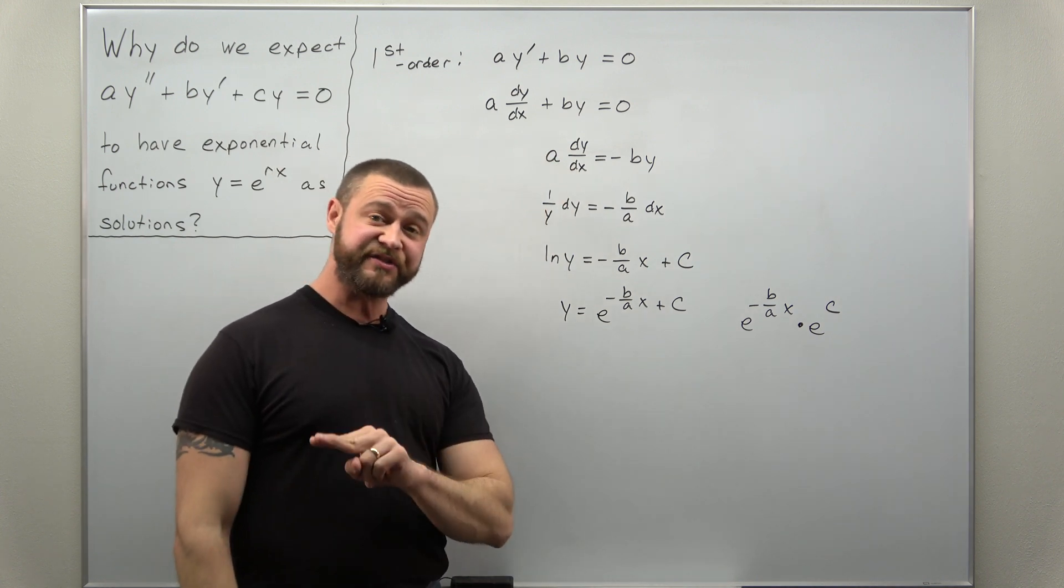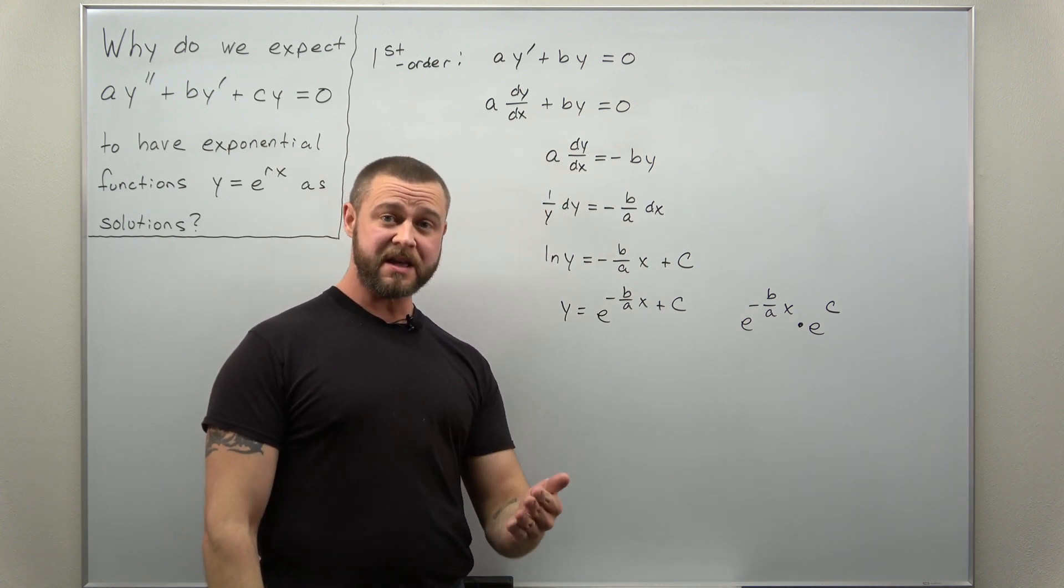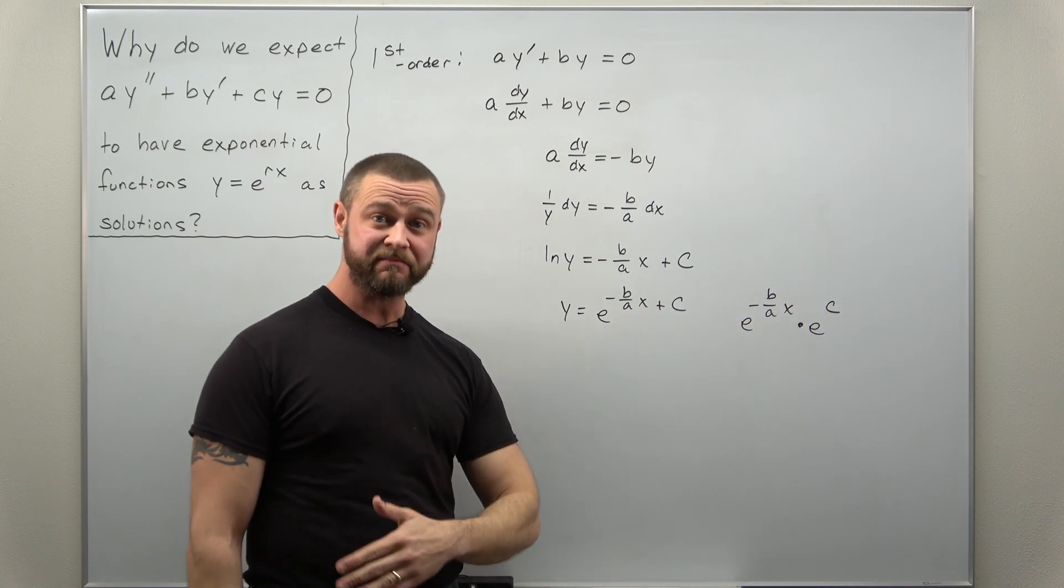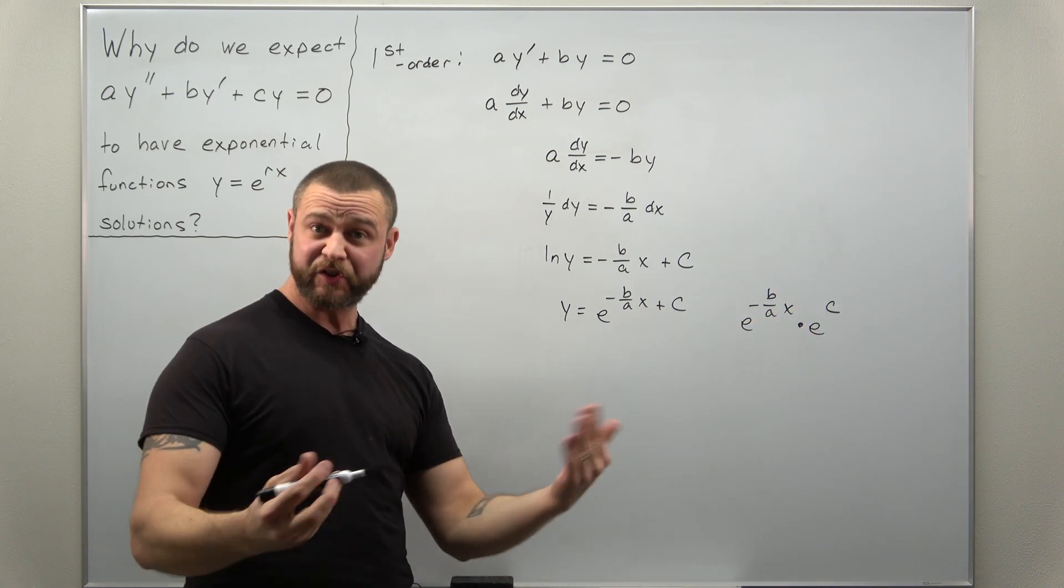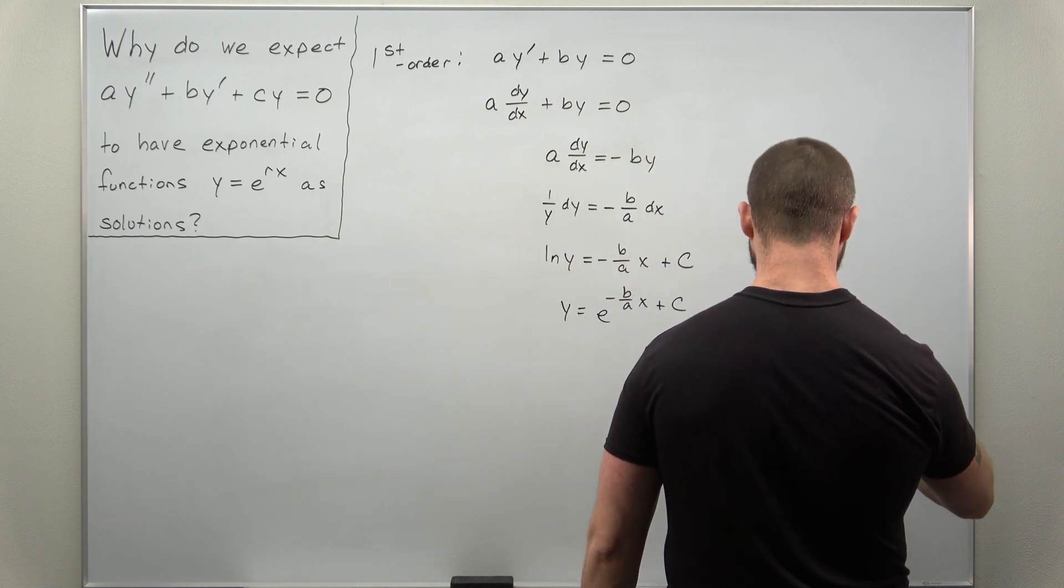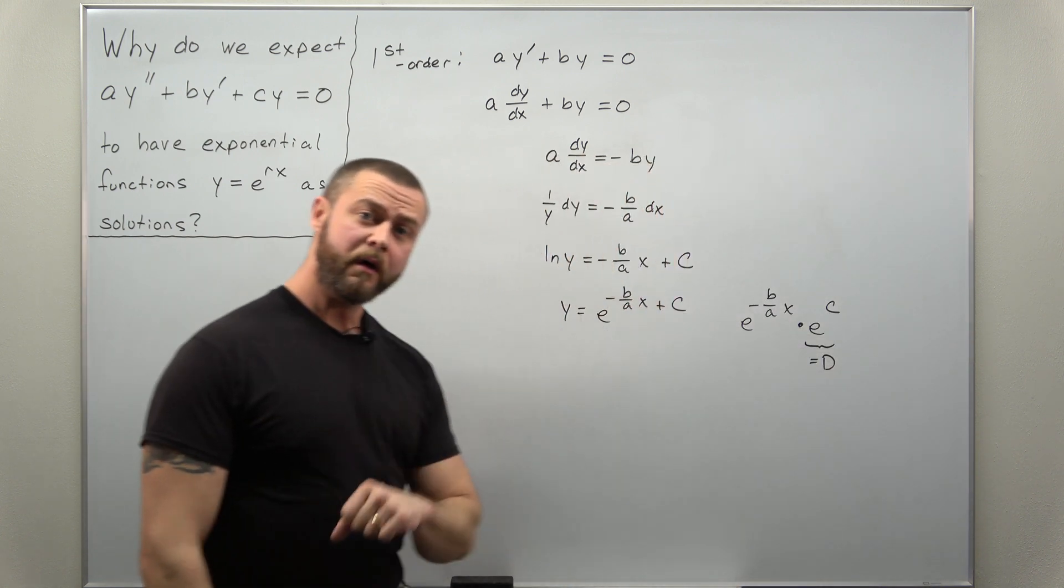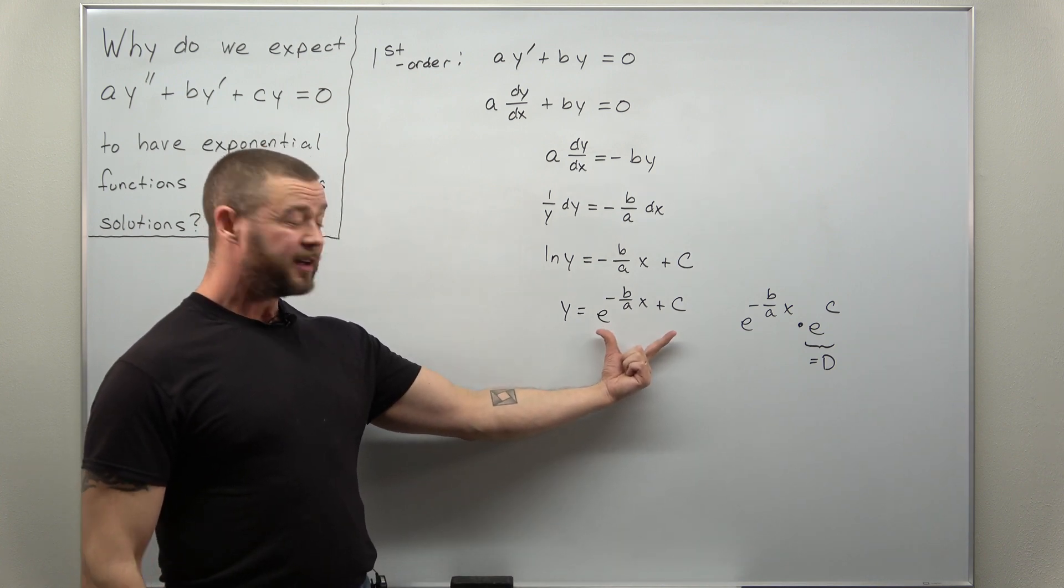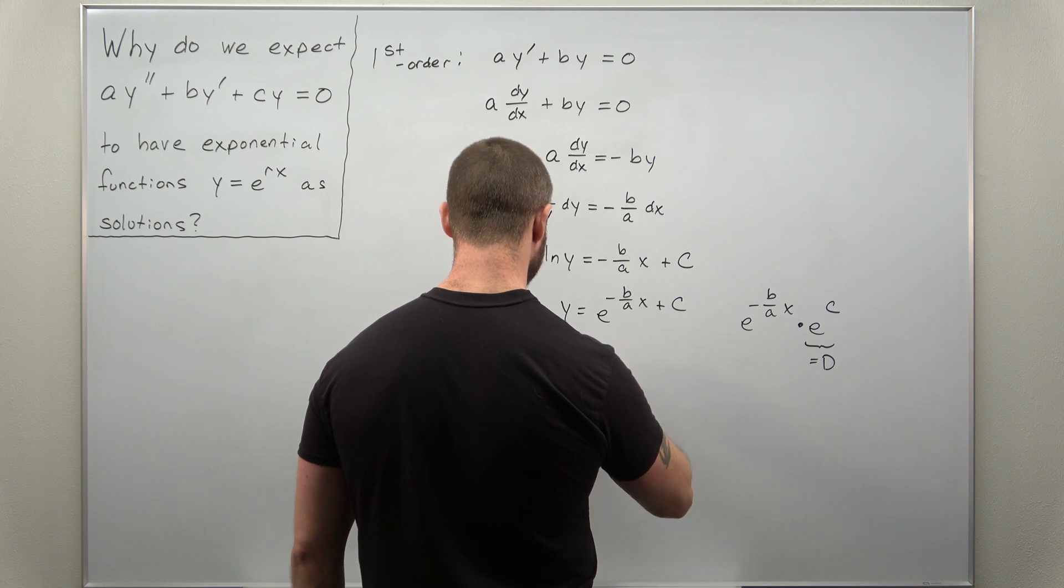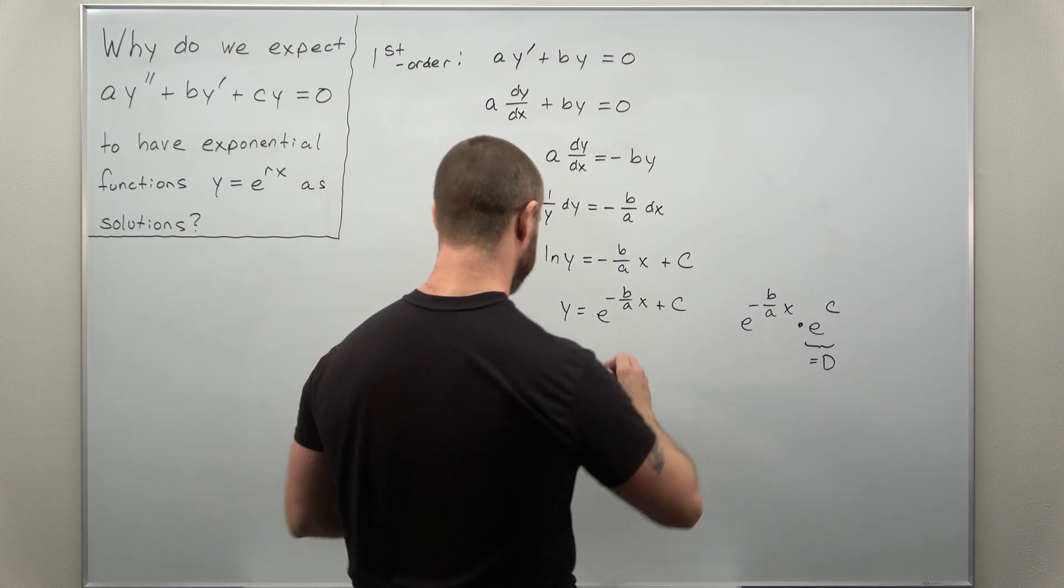And we're going to recognize c as a constant. E is also a constant. A constant raised to a constant is another constant. Let's call that d. I can write this side in a little bit cleaner form. I can write this as y equals, I'll take that d to the front.